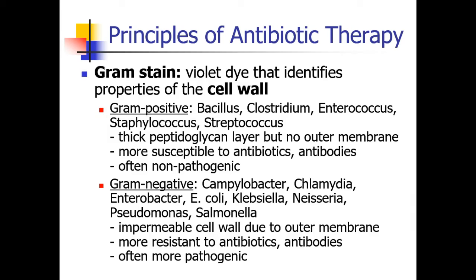One piece of microbiology you need to be aware of is the Gram stain. Gram stain is a violet dye that, when applied to bacterial cells, identifies properties of the cell wall. Gram positive bacteria have cell walls, and they include Bacillus, Clostridium, Enterococcus, Staphylococcus, and Streptococcus bacteria. They have a thick peptidoglycan layer but no outer membrane. They are more susceptible to antibiotics and antibodies, and often these bacteria are non-pathogenic.